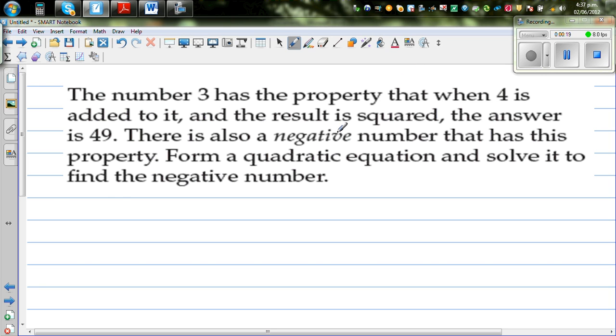So let's first understand what they're telling us in the first sentence. The number 3 has the property that when 4 is added... So what are they saying? If you add 4 to 3 and then square it, which is nothing but 7 squared, which is 49. That's easy.